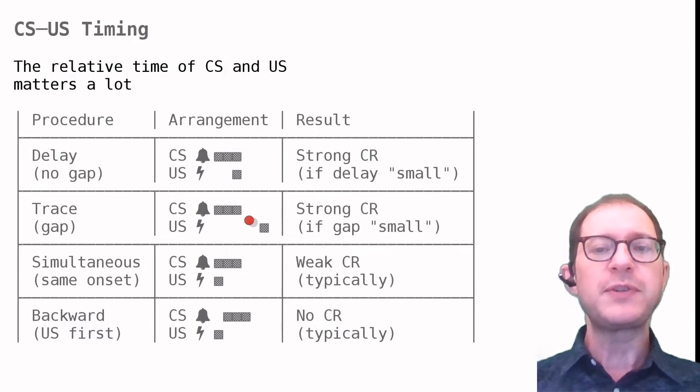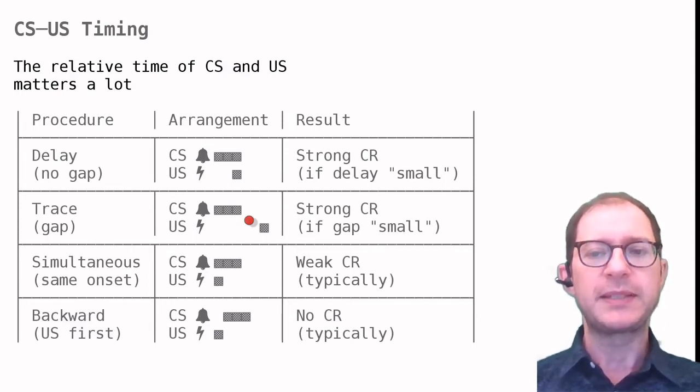Trace conditioning forces the animal to remember a CR that is no longer there. For this reason, it can be used to study short-term memory in animals. A later lesson covers short-term memory in more detail.